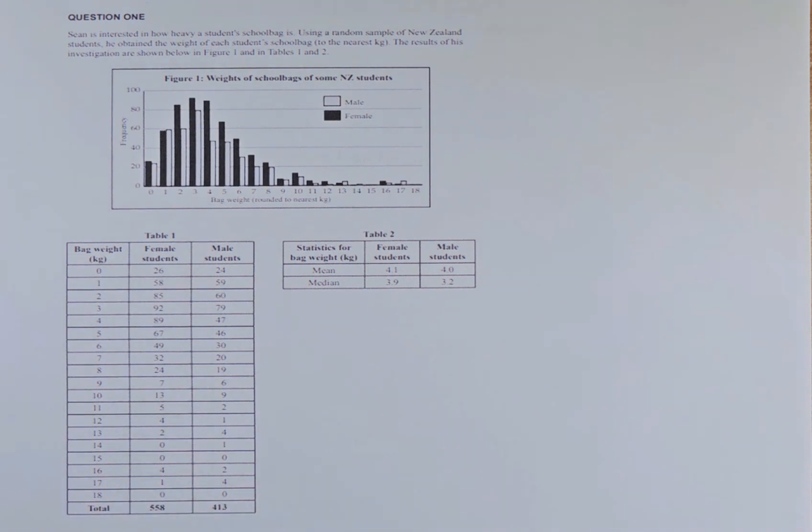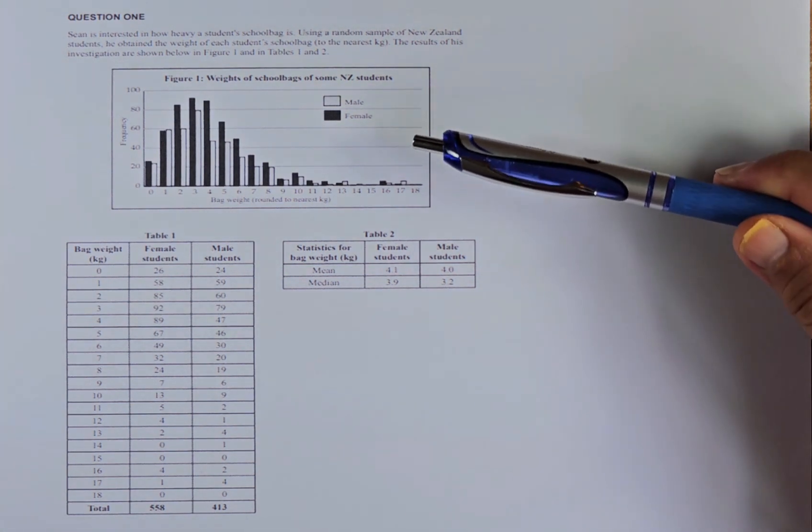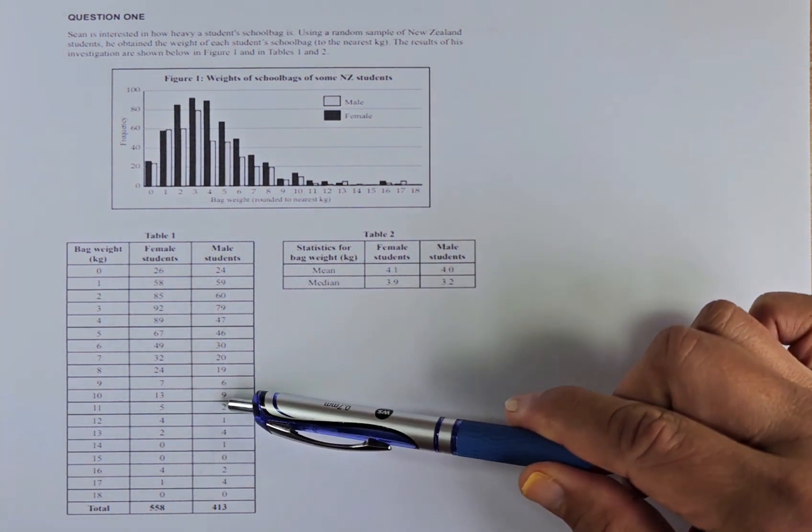The first part of the question is just information, so there's no working on it. Sean is interested in how heavy a student's school bag is. Using a random sample of New Zealand students, he obtained the weight of each student's school bag to the nearest kilogram. The results of his investigation are shown in Figure 1, which is the graph, and Tables 1 and 2.